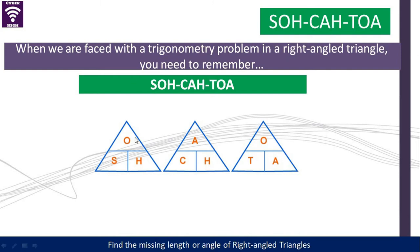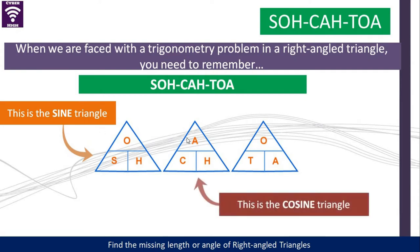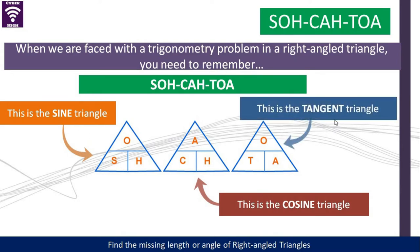So we'll be using these triangles. As you can see, they have been drawn in a way that we have SOHCAHTOA. The first one is SOH — this is for the sine triangle. The second one is for the cosine triangle. Remember, C for cosine, S for sine, and the third one is for the tangent triangle. Remember, this is SOH, CAH, TOA.